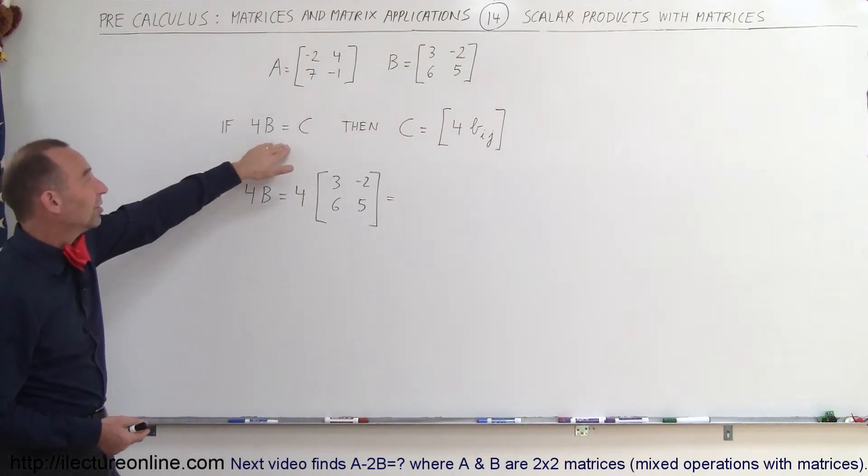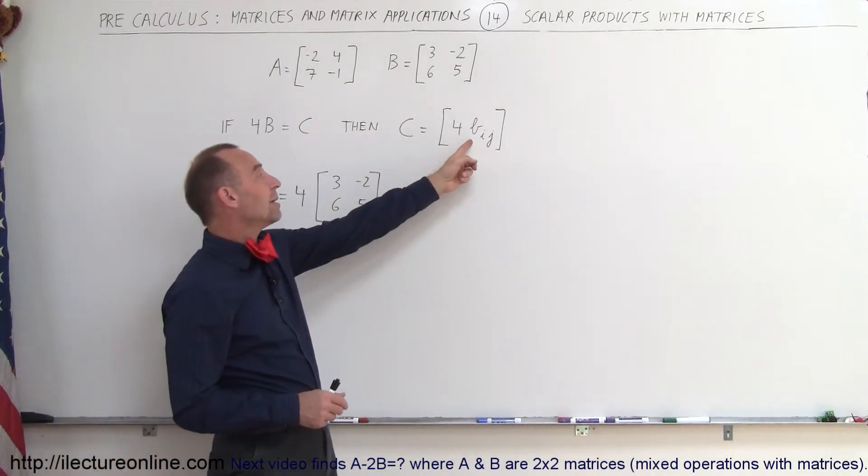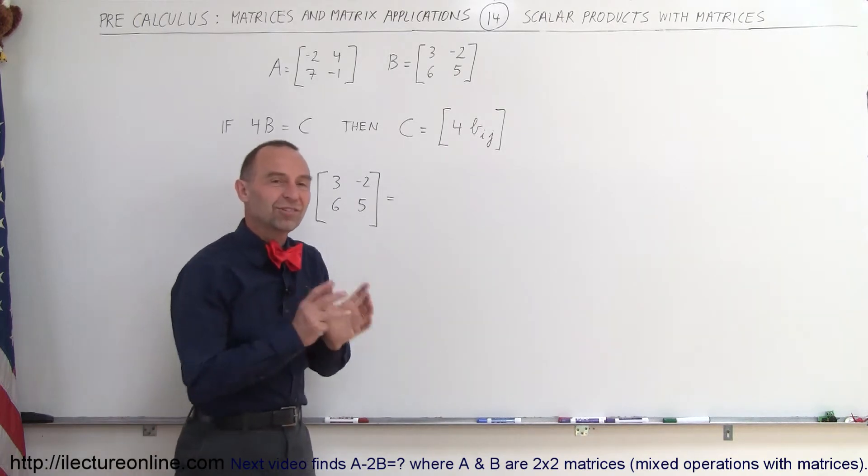If that's true, if 4B is equal to C, then we can say that C is simply equal to each element of B multiplied times 4, which then becomes the elements of C.